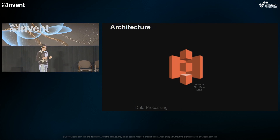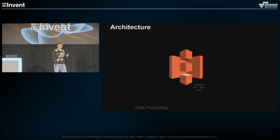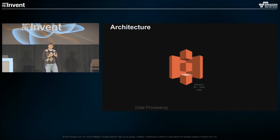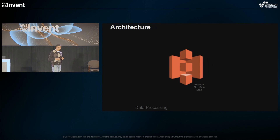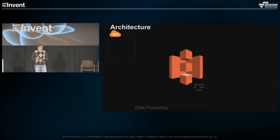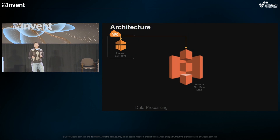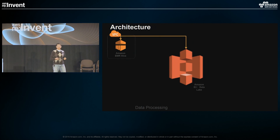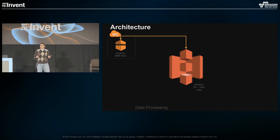At the center of our architecture is Amazon S3. We store all of our data and code on S3 and use S3 as our data lake. When there is data ready to be processed, we spin up an EMR cluster, which reads the data and code from S3, writes the transformed and aggregated output back to S3, and then shuts down.